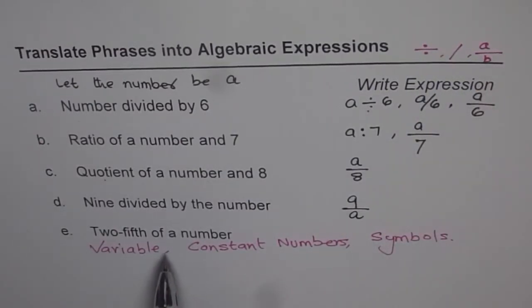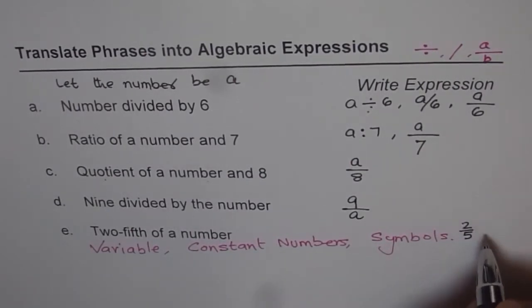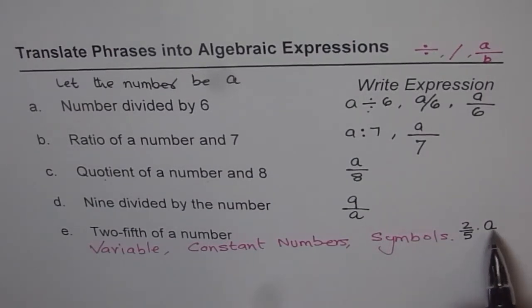The last one here is two-fifth of a number. So two-fifth means 2 over 5 of a number. Of is multiplication actually, of a number a.